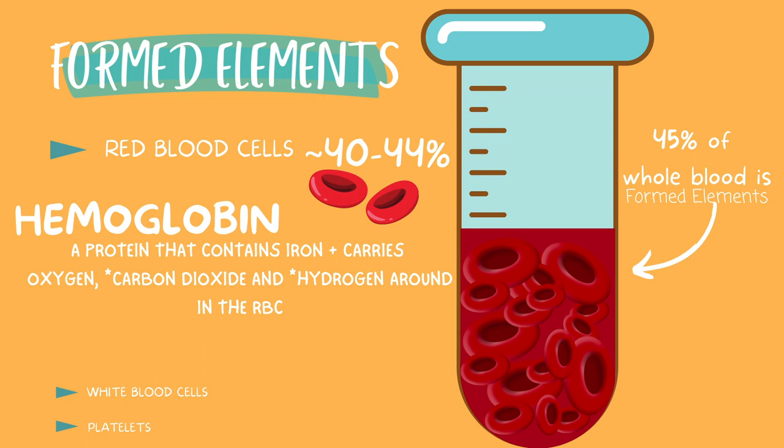Red blood cells are not able to repair themselves, so when they age, they must die off and be replaced. After they are born and leave the red bone marrow, they live for approximately 120 days before they are broken down and disposed of by the liver and the spleen. Red blood cell production is called erythropoietin, which is triggered by low oxygen levels in the blood.